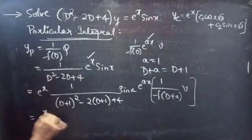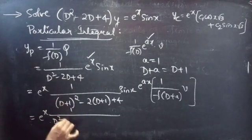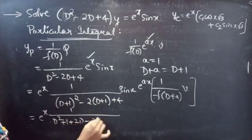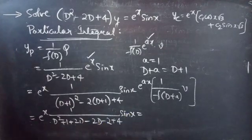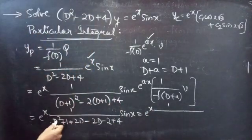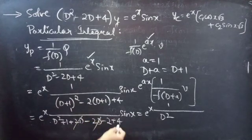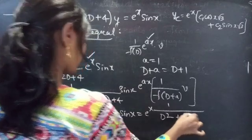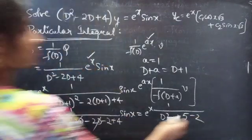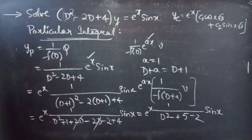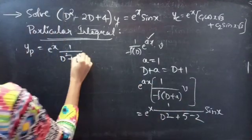This equals e to the power x into 1 by (D+1)² expanded using the (a+b)² formula, giving D² + 2D + 1, minus 2D minus 2 plus 4, into sin x. This equals e to the power x into 1 by D² plus 2D minus 2D cancelled, plus 1 plus 4 minus 2, into sin x. Then y becomes e to the power x into 1 by (D² + 3), into sin x.